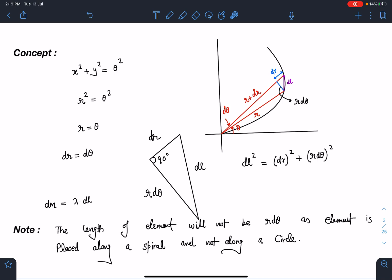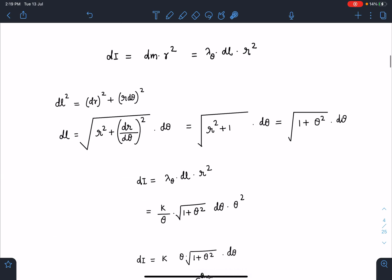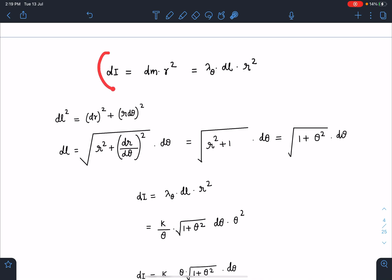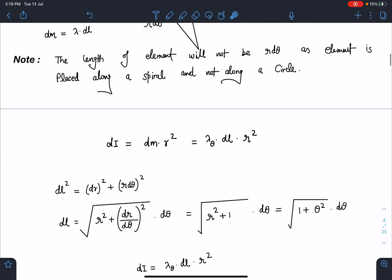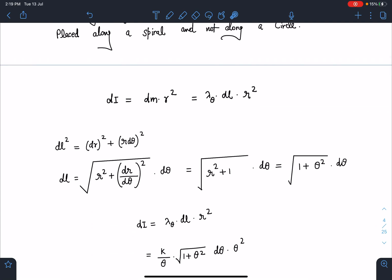So here now it's very simple. dI I can write as dm into r² because we have to find about z-axis and its distance is given as r. So dm·r² will be the moment of inertia, where dm is λ_θ into dl into r². So now I'm going to calculate dl.